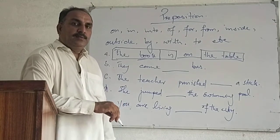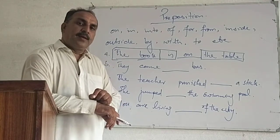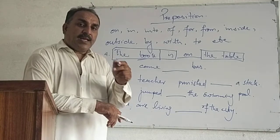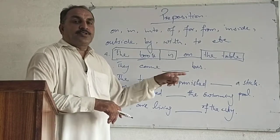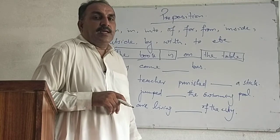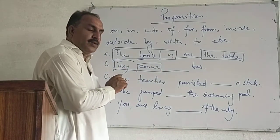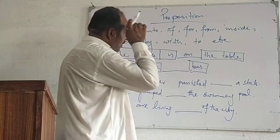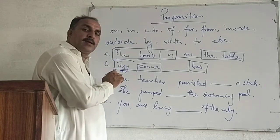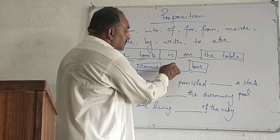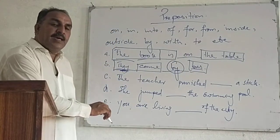Similarly, 'they came' is a short clause. But how did they come there? And we have a source — the bus. 'They came by bus.' 'They' is a noun phrase, 'came' is a verb phrase, and 'bus' is a noun phrase. The word 'by' makes a link between the bus and them. They came by bus.